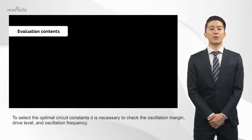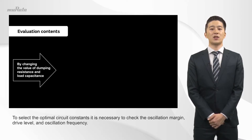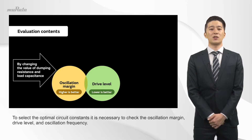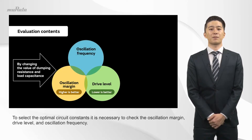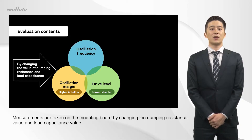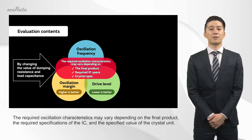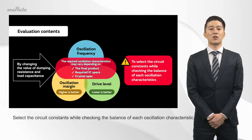To select the optimal circuit constants, it is necessary to check the oscillation margin, drive level, and oscillation frequency. Measurements are taken on the mounting board by changing the damping resistance value and load capacitance value. The required oscillation characteristics may vary depending on the final product, the required specifications of the IC, and the specified value of the crystal unit. Select the circuit constants while checking the balance of each oscillation characteristic.